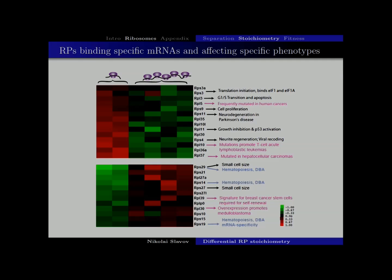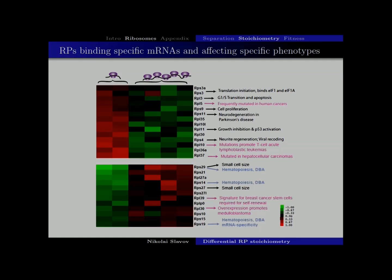Ribosomal proteins have lots of well-characterized phenotypes when deleted — a rich literature for most proteins. One can look at the ribosomal proteins enriched in monosomes and ask: is there anything in common between their phenotypes? Conversely, do the ribosomal proteins enriched in polysomes share anything in common in terms of studied functions? If one stares at what is known about them, one may see that mutations common in cancer in this gene set tend to be gain-of-function, while the other set tends to be loss-of-function. But that's really just storytelling — I'm personally not convinced by that. So let's do an experiment.